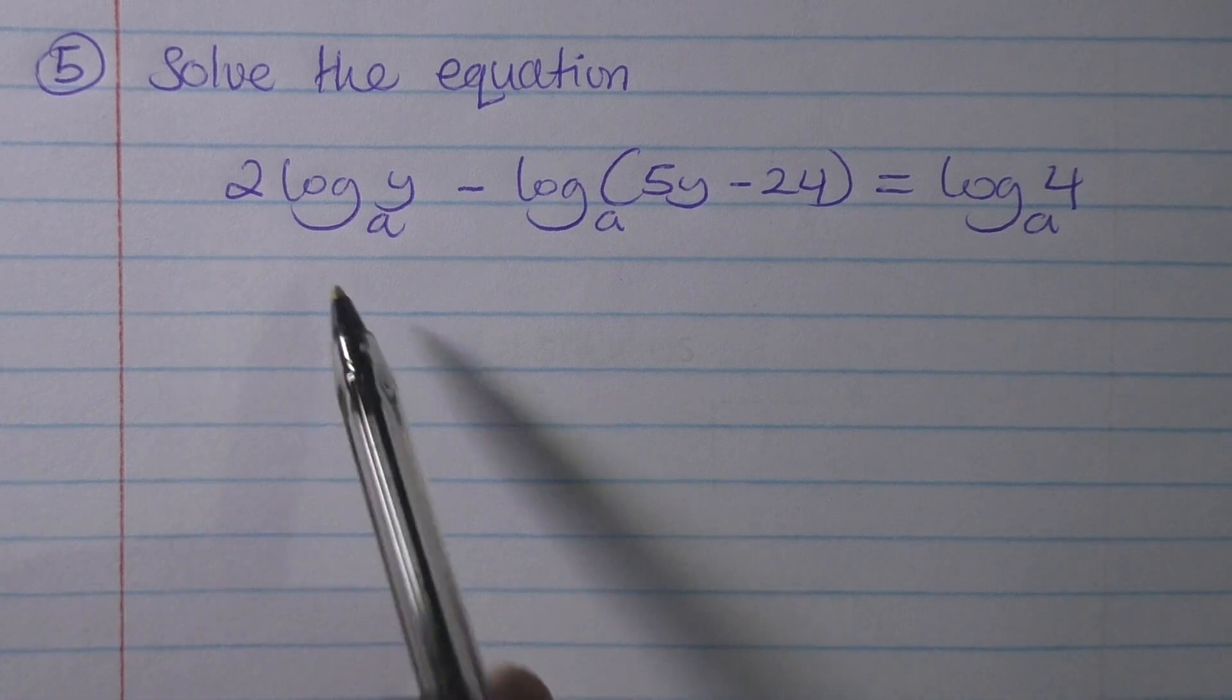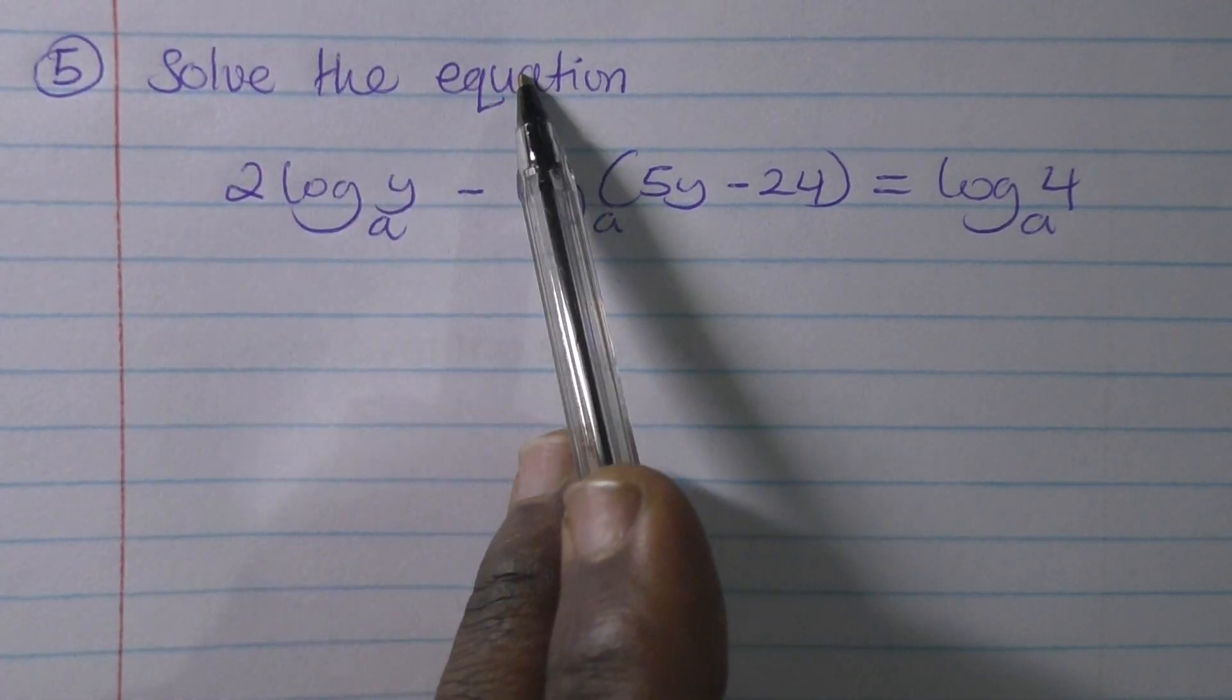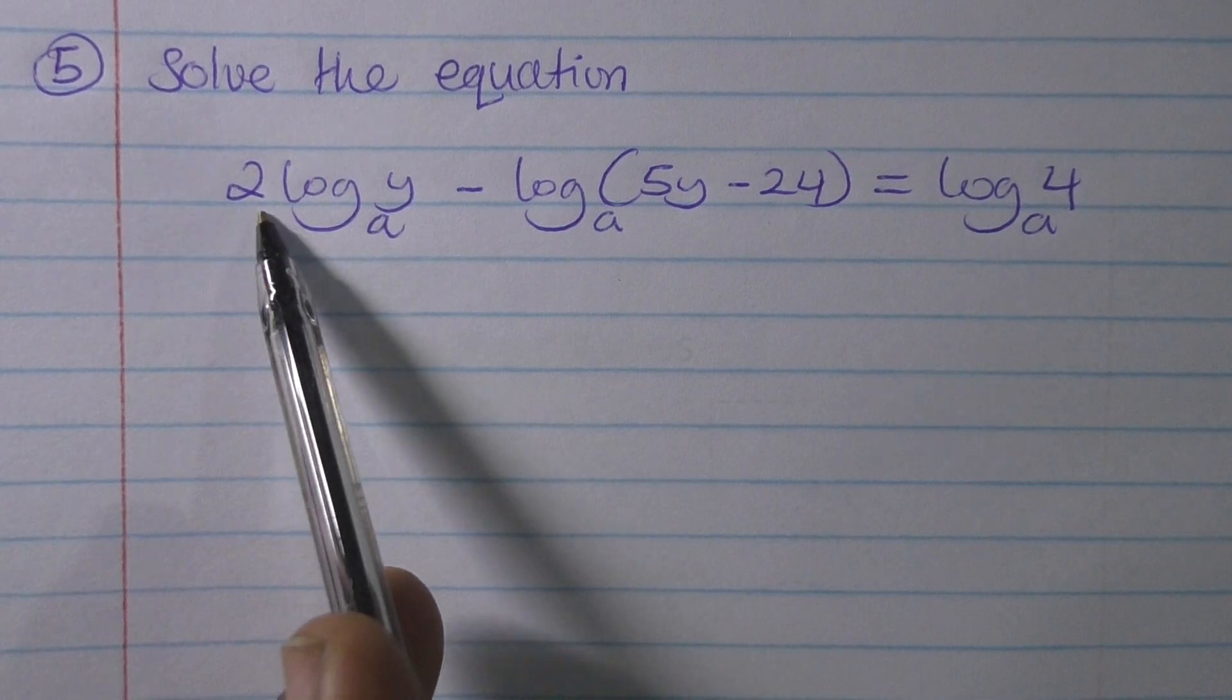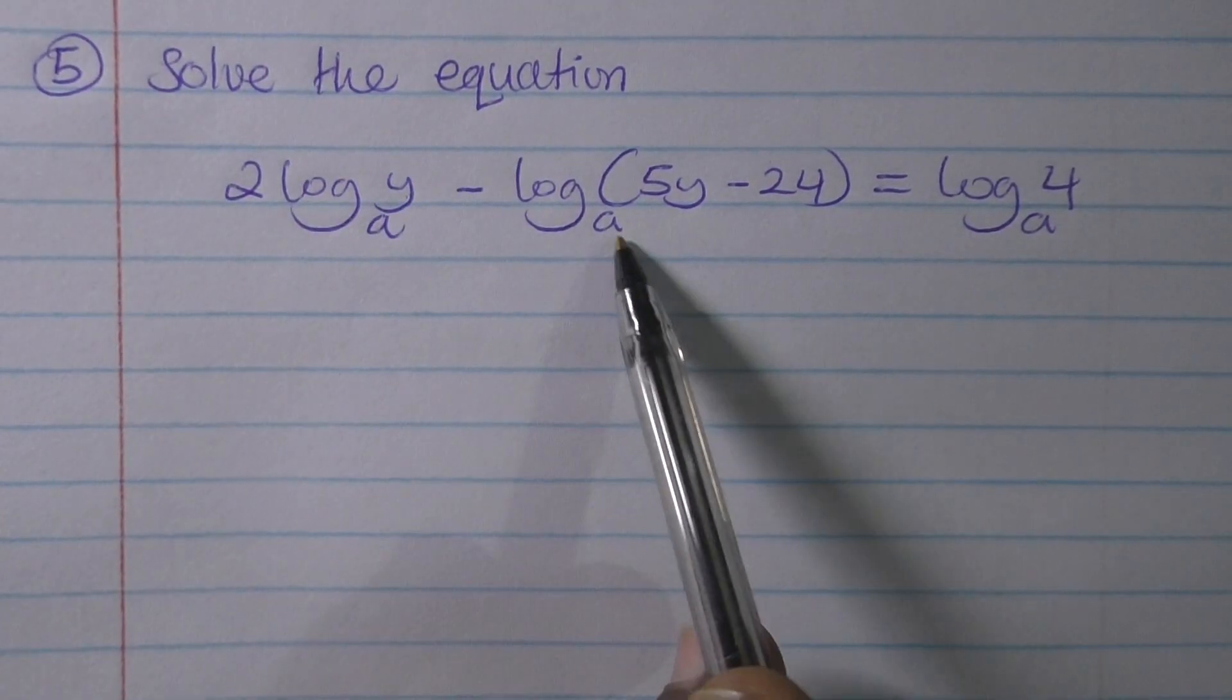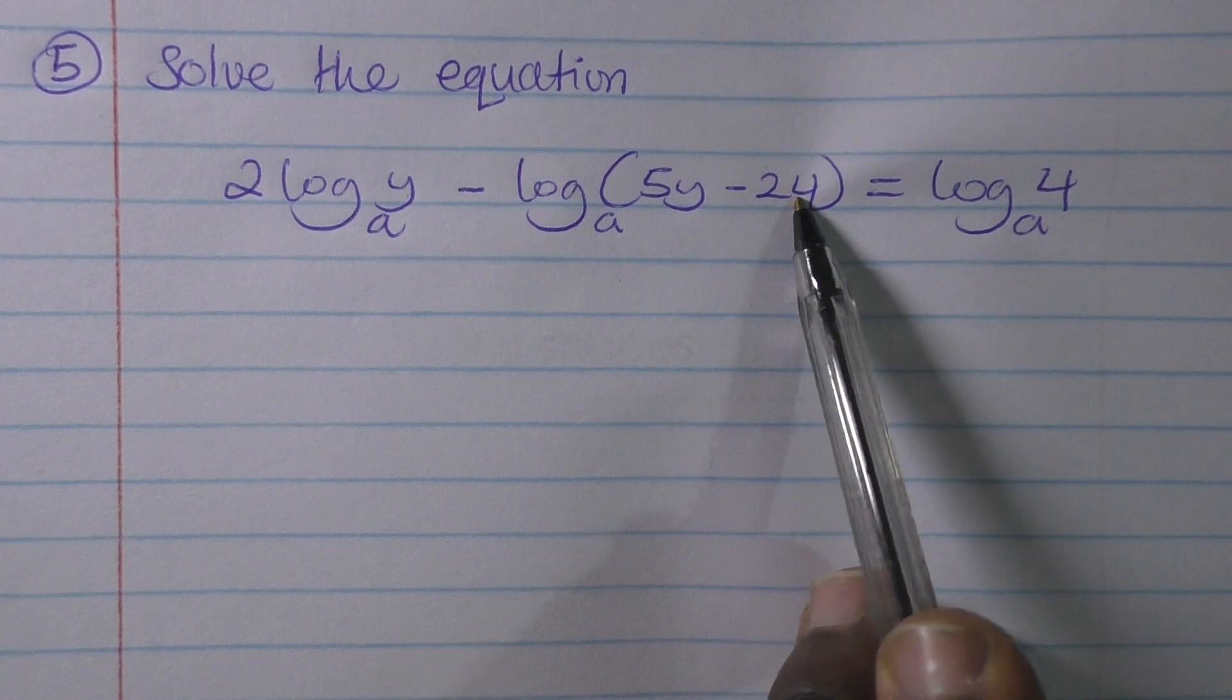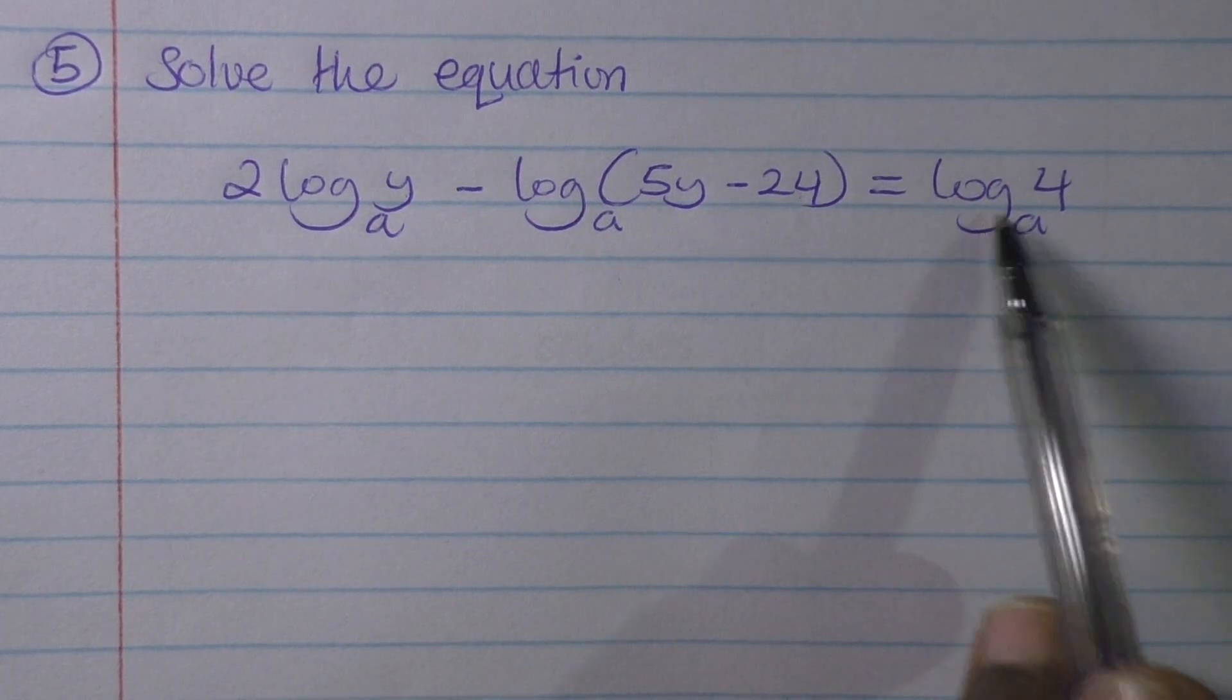We are told to solve the equation, which is 2 log base a of y minus log base a of (5y minus 24) equaling to log base a of 4.